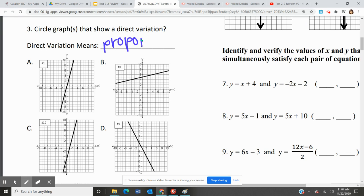So we're looking for graphs that go through the origin. Here A goes through the origin. B does not go through the origin, so that cannot be one of our answers.